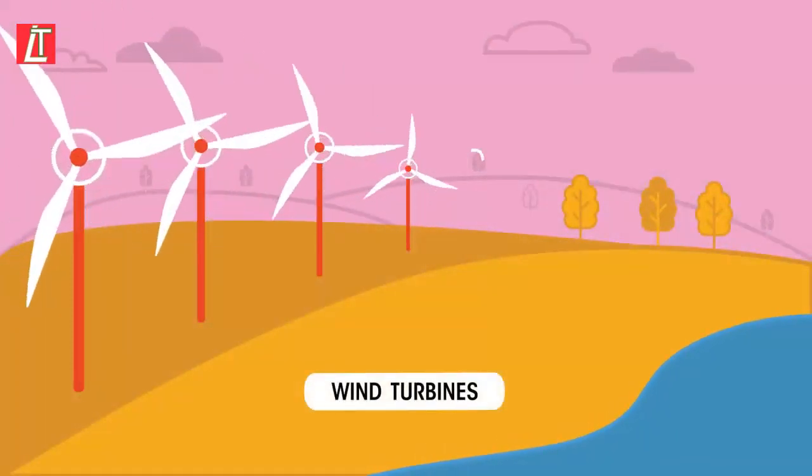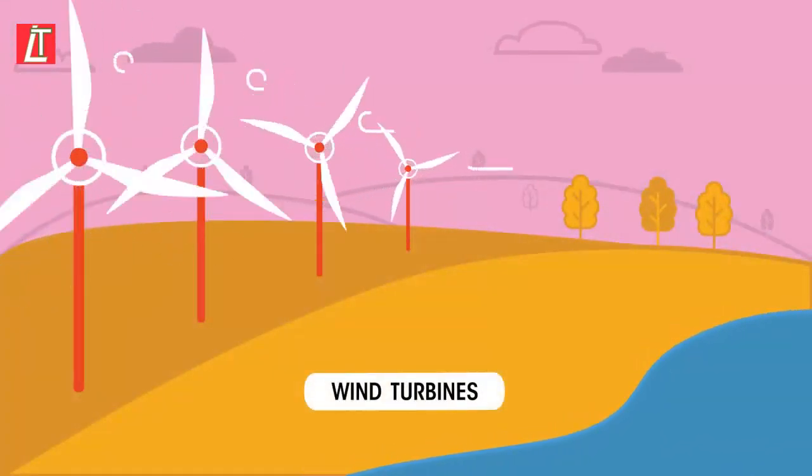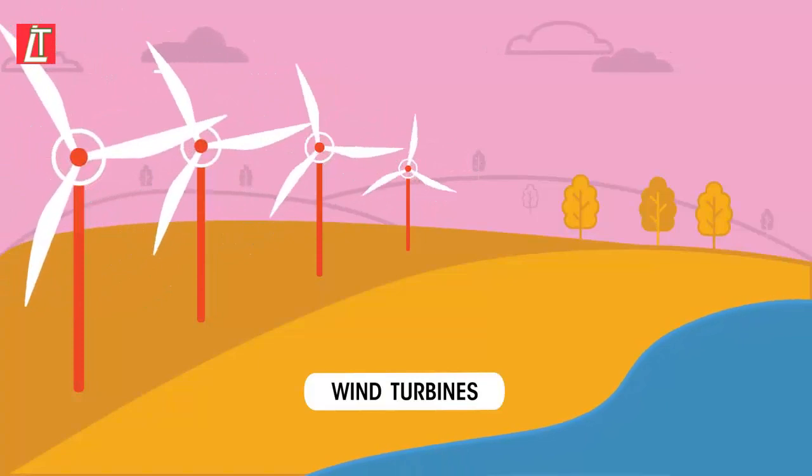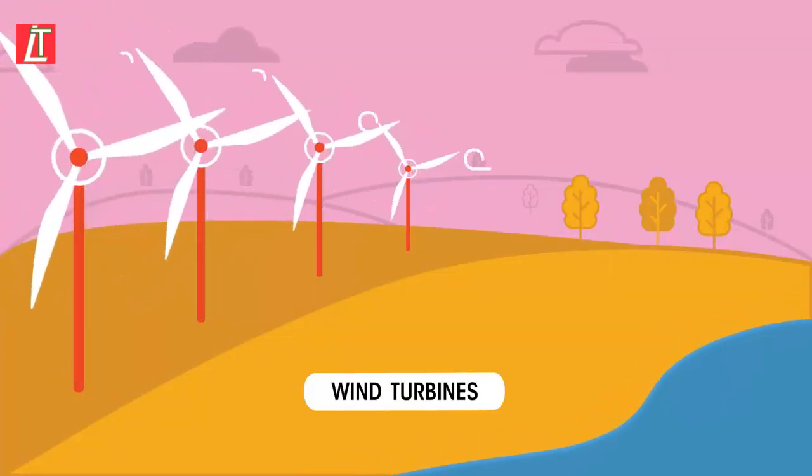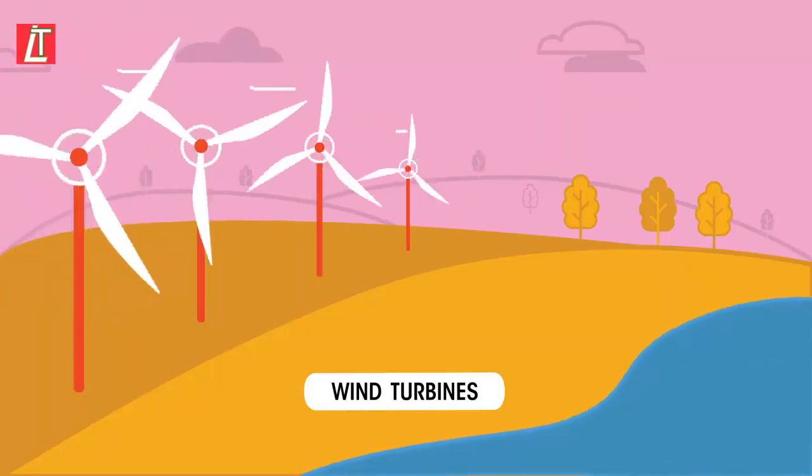The uneven heating of the earth's surface by the sun creates winds. Using wind turbines, we can transfer the kinetic energy of the wind to electric current, which we can then use in our homes.